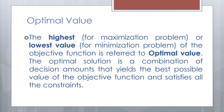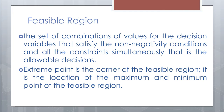The optimal value for a maximization problem is the highest value obtained by substituting the values of X and Y into the objective function. For a minimization problem, it is the lowest value obtained. The optimal solution is a combination of decision amounts that yields the best possible value of the objective function and satisfies all the constraints. A feasible region is the set of combinations of values for the decision variables that satisfy the non-negativity conditions and all constraints simultaneously.